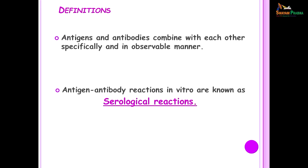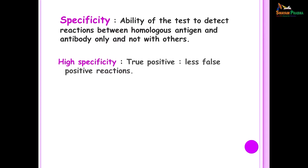Now let us move on to some definitions. Antigens and antibodies when they combine with each other specifically and in an observable manner — these types of reactions are called antigen-antibody reactions. Those which are conducted in vitro, that is outside the body, are referred to as serological reactions. Another terminology you will come across is specificity. When we talk about the specificity of the test, we talk about its ability to detect reactions between homologous antigen and antibody only, and not with others.